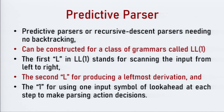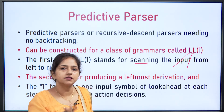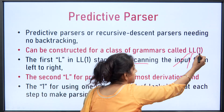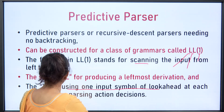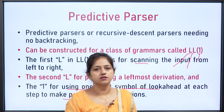First, the basics of predictive parser. As discussed in the previous class, a predictive parser is a top-down parser — it is a recursive descent parser where no backtracking is required. Such parsers are suitable for grammars that are LL(1). In LL(1): the first L stands for scanning the input string from left to right, the second L stands for obtaining the leftmost derivation, and 1 stands for using one input symbol of lookahead at each step to make the parsing action decision.